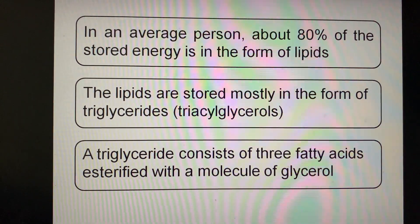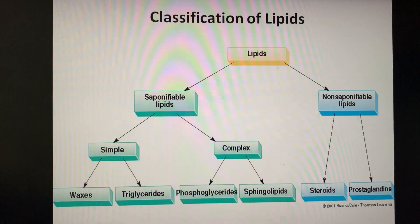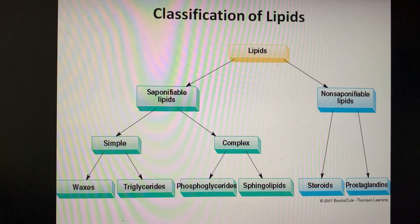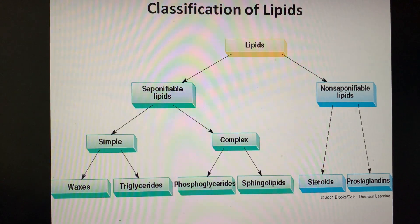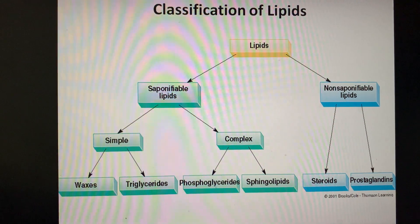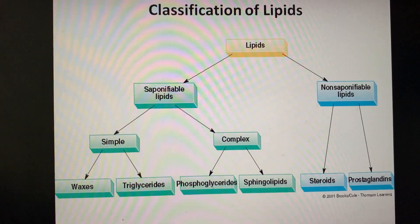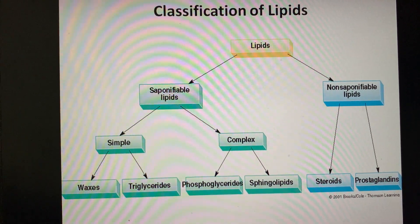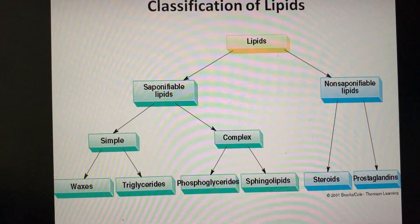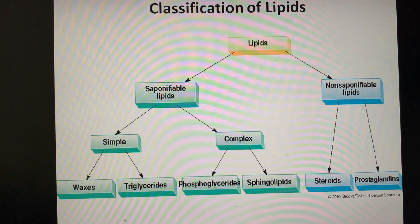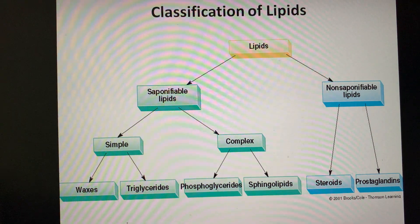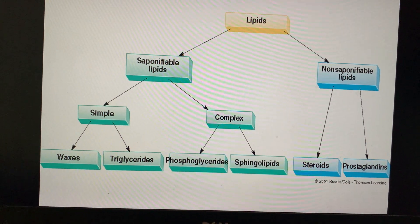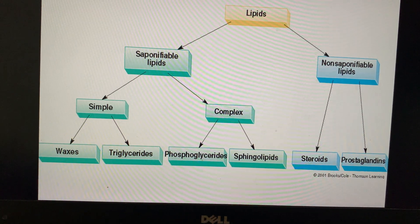Classification of lipids: they are divided into saponifiable and non-saponifiable lipids. Saponifiable lipids can form soaps. They are relatively simple, including waxes and triglycerides as simple types, and phosphoglycerides and sphingolipids as complex types containing phosphate groups and other complex structures. Non-saponifiable lipids cannot be saponified; these include steroids and prostaglandins.